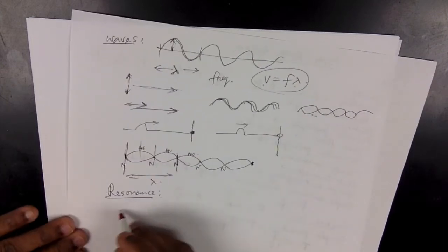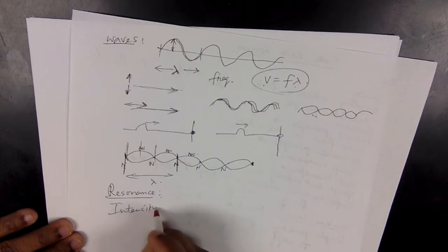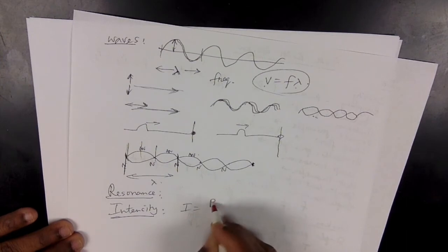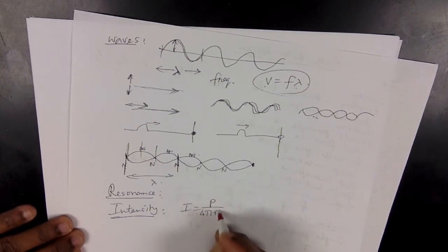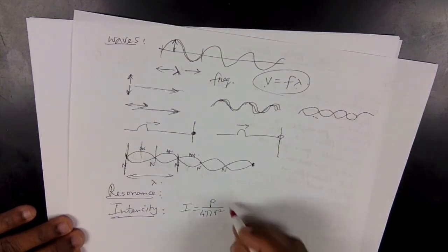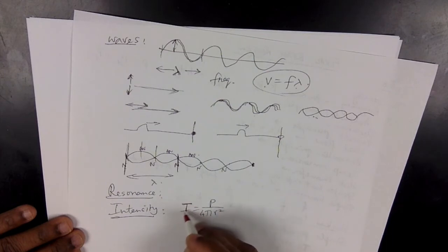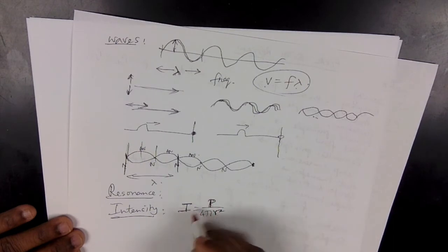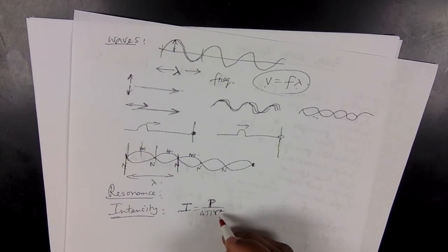You also have intensity calculations. Intensity is power over 4πr², where r is the distance. You should know how to find intensity if given both, or if given intensity and distance you should be able to find power, and vice versa — if given power and intensity, you should find the distance.